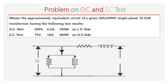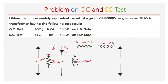Now let us substitute everything in the equivalent circuit. V1 is equal to 200 V, R0 is equal to 111.11 ohms, X0 is 33.7 ohms. The magnetizing current Im is 5.93 amperes and Ic is 1.8 amperes. The sum of these two currents is I0. RE1 referred to the LV side is 0.0185 ohms, and XE1 is equal to 0.0373 ohms, with the secondary voltage V2 dash.